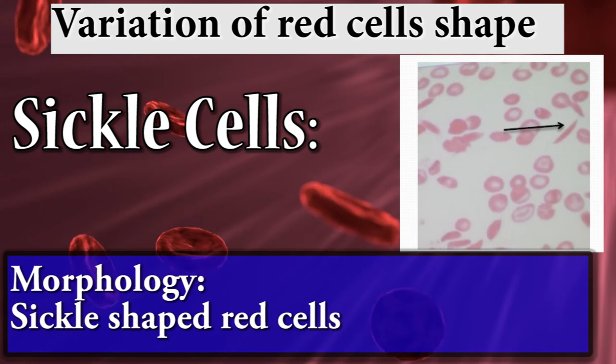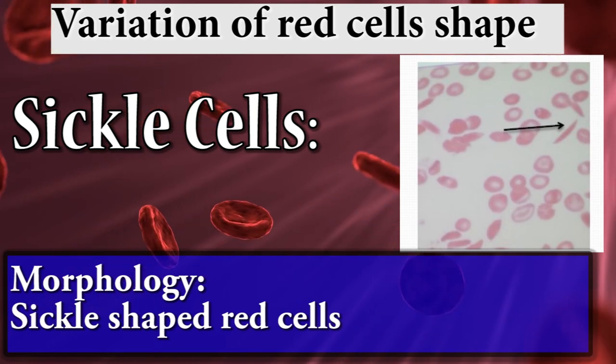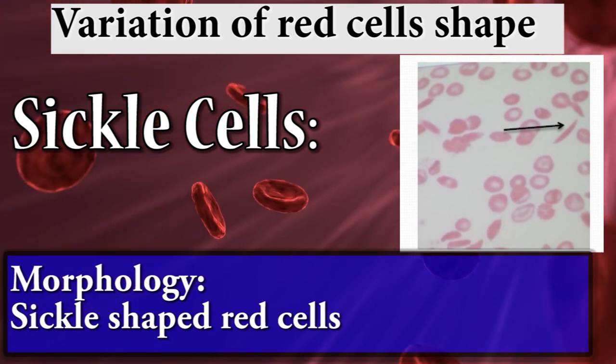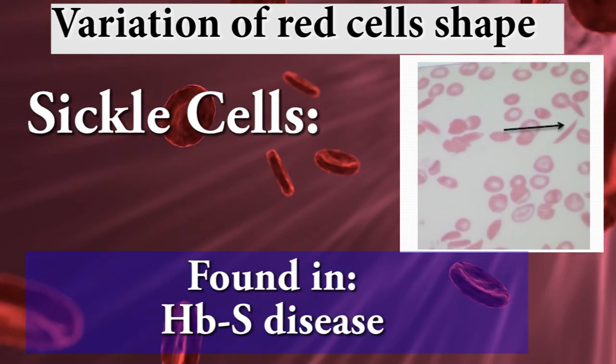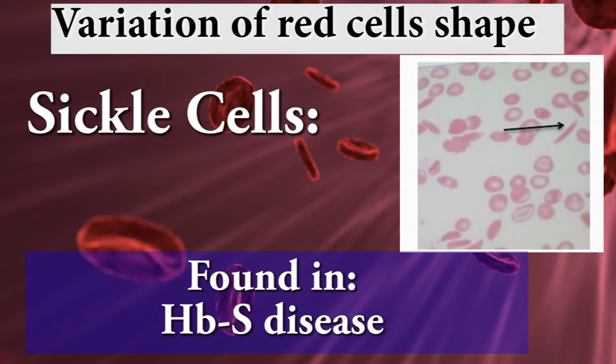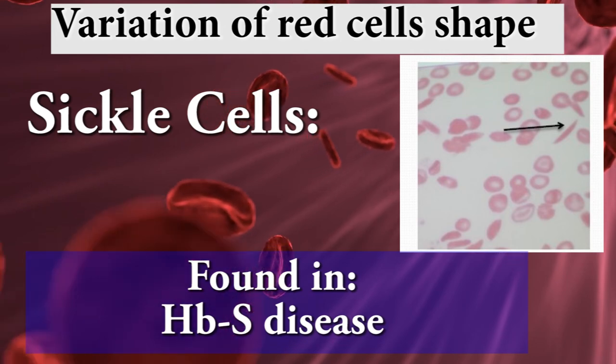Sickle cells: sickle-shaped red cells found in hemoglobin S disease.